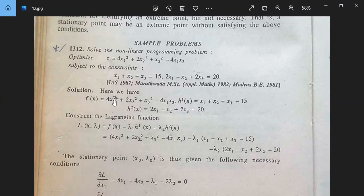Here we have F(x) is 4x_1 squared plus 2x_2 squared plus x_3 squared minus 4x_1 x_2. h_1(x) is x_1 plus x_2 plus x_3 minus 15, and h_2(x) will be 2x_1 minus x_2 plus 2x_3 minus 20. This is the value of h_1, this is h_2. The stationary point (x_0, lambda_0) is thus given by the following necessary conditions.